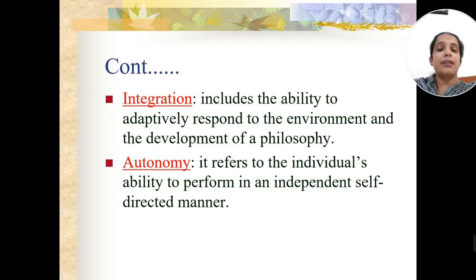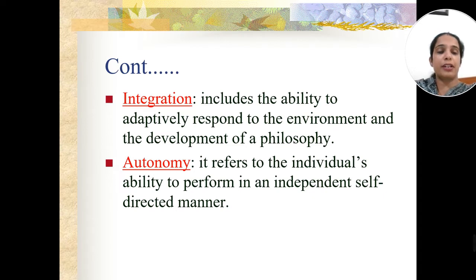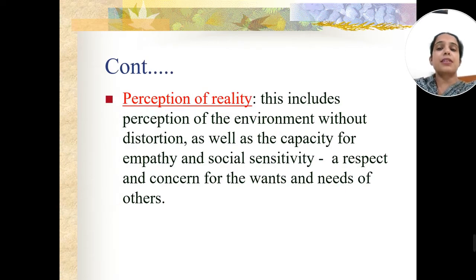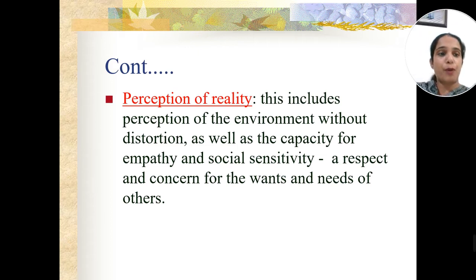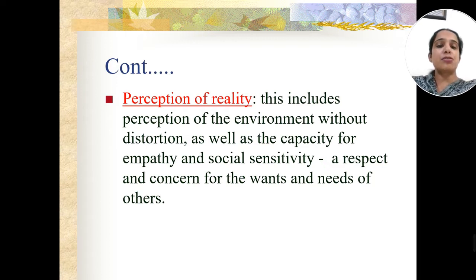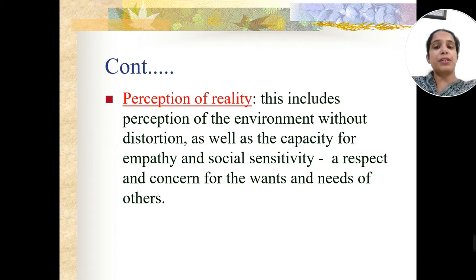The fourth indicator is autonomy, which means the individual's ability to perform in an independent, self-directed manner — the person can perform independently according to the situation and surrounding environment. The fifth indicator is perception of reality — the person is able to perceive the environment properly, show empathy and social sensitivity, and have a feel of reality. They should not be in daydreaming.